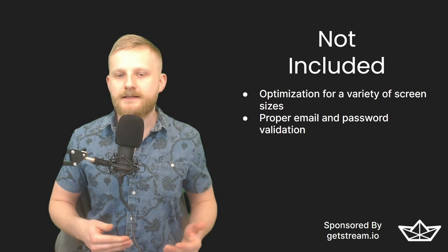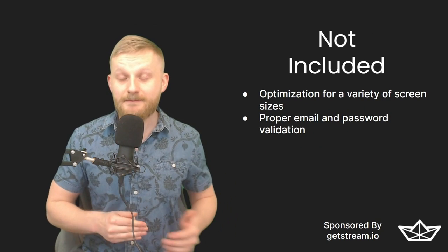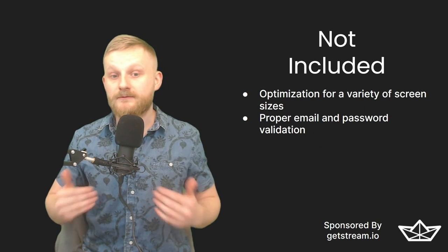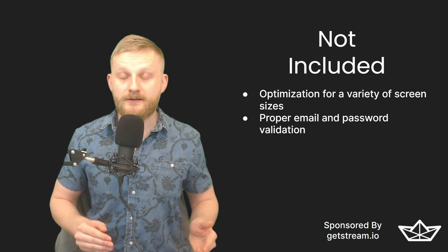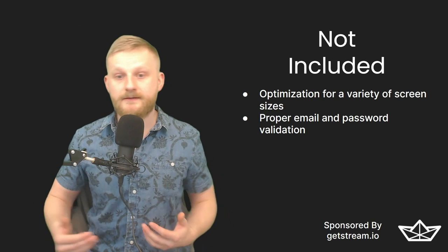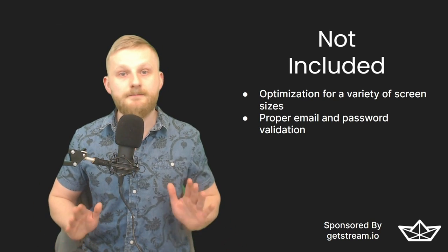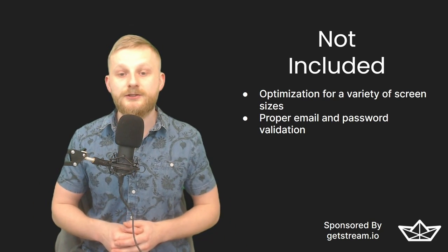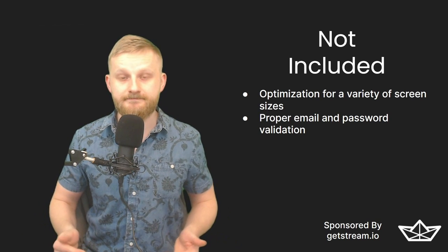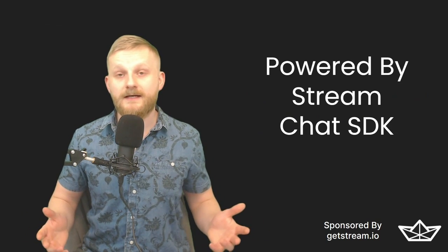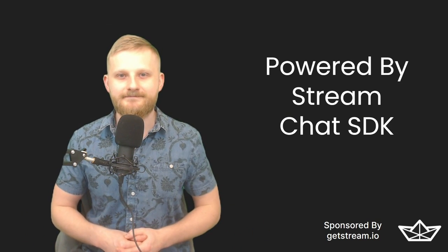We will work heavily with Stream's chat SDK and make use of their user and channel data storage to drive — excuse the pun — the ride-sharing features of the app. We will use Google Places to create autocomplete destination searches, Google Maps to track passengers and drivers, as well as Google Directions to draw directions over the map. The idea here is to show you how to build an MVP — this app is not optimized for a variety of screen sizes, and we won't be doing any meaningful validation during user signup.